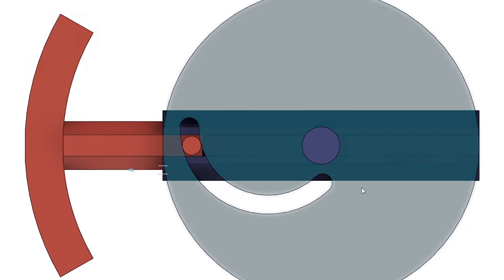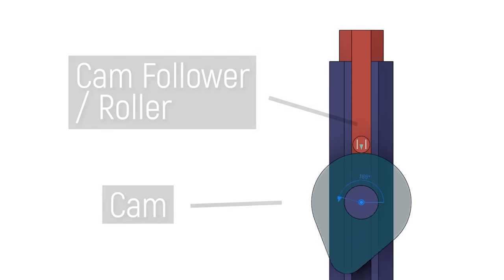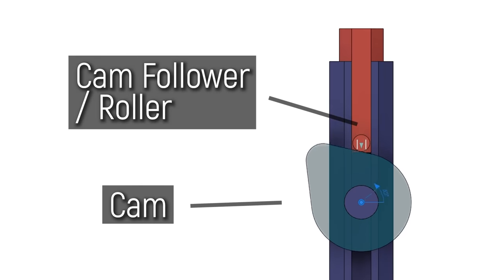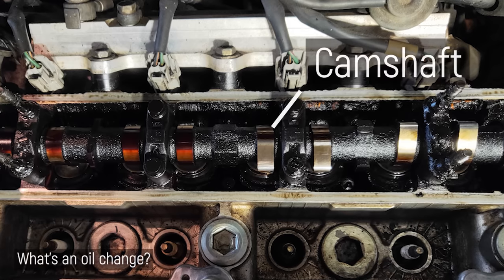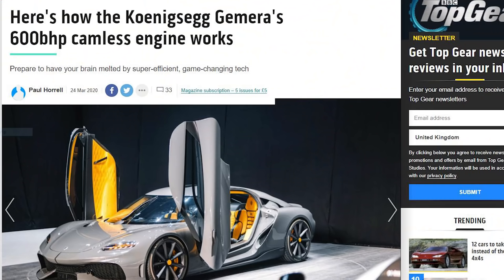What we have here is a basic cam and roller. Cam and roller mechanisms are fantastic at converting rotary motion into linear actuation and even today in a world of computerized solutions to mechanical problems they're still used in tons of applications like your car. Unless it's a Koenigsegg.